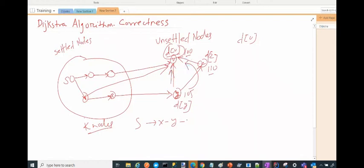This is some positive number. And then S to X to Y—since it falls on the shortest path, distance of Y will always be less than or equal to distance of V, because Y comes before V.